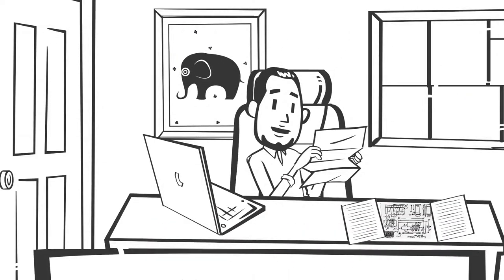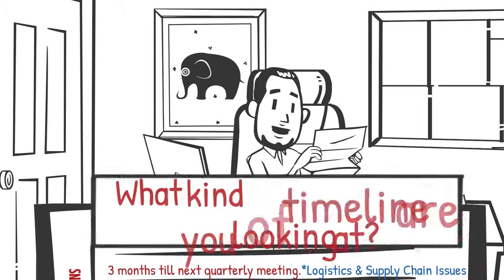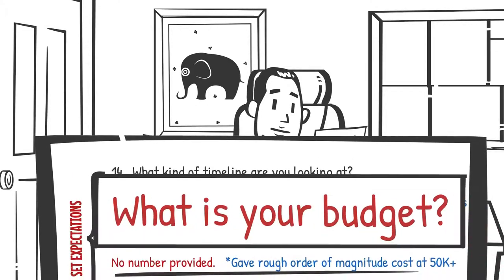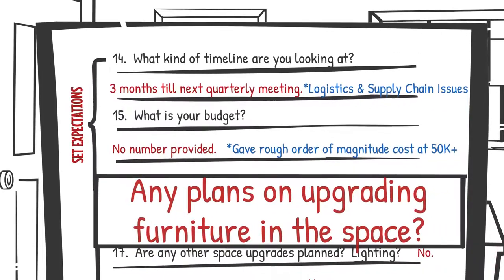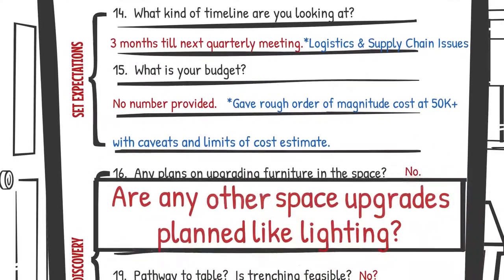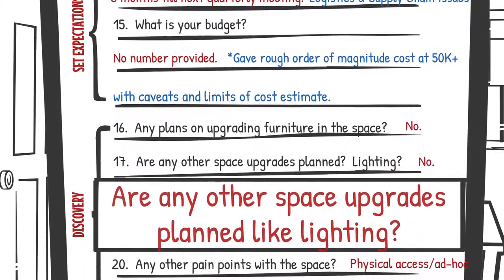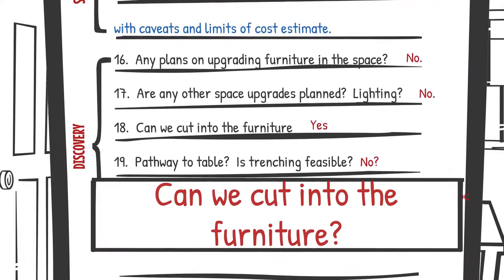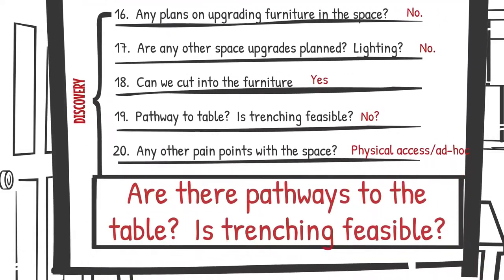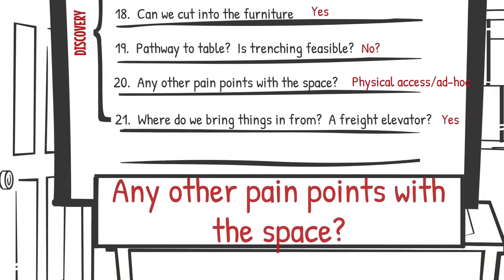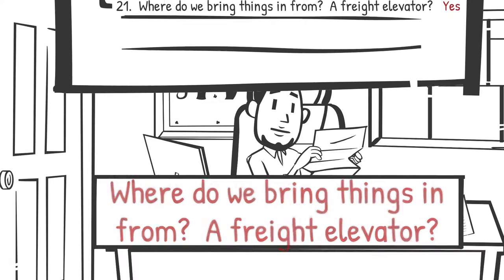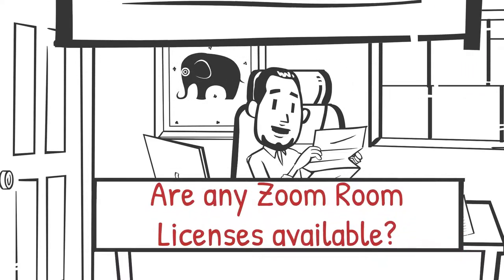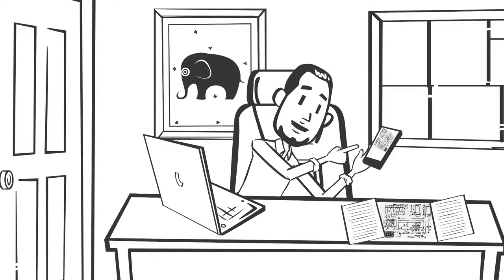Then I dived into setting expectations: What kind of timeline are you looking at? What is your budget? And then I did a little exploring: Are there any plans for upgrading furniture in the space? Are any other space upgrades planned, like lighting? Can we cut into the furniture? Are there pathways to the table? Is trenching feasible? Are there any other pain points with the space? Where do we bring things in from — a freight elevator? And are any Zoom Room licenses available? Before I forget, I need to digitize my handwritten work.